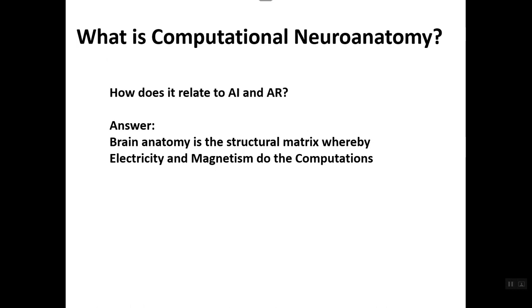What is computational neuroanatomy and how does it relate to artificial intelligence? The answer is the brain neuroanatomy is the structural matrix whereby electricity and magnetism do the computations. It's the shape and mapping of the brain that does the computations.